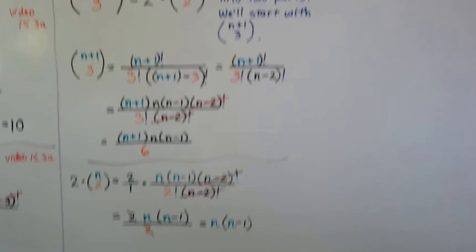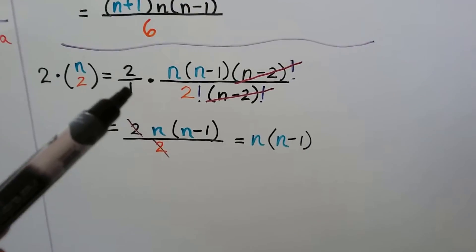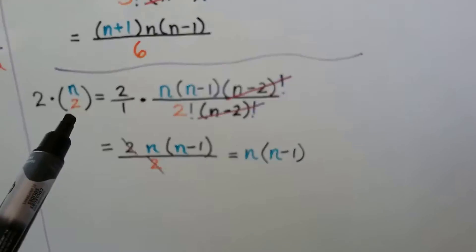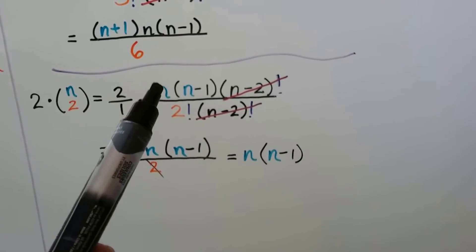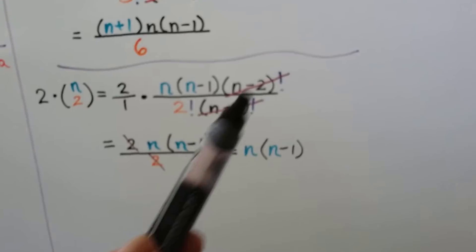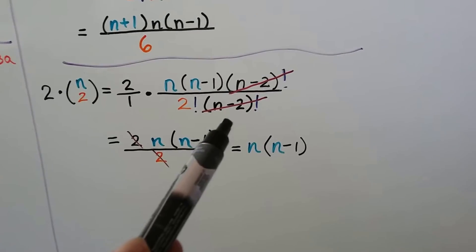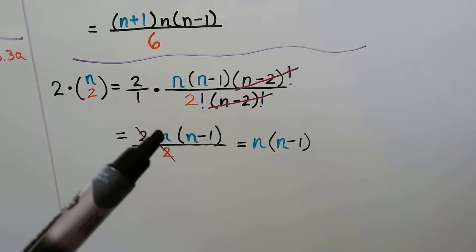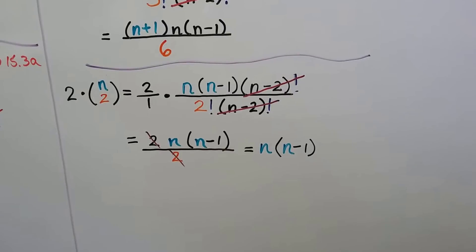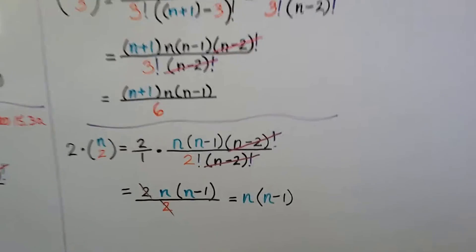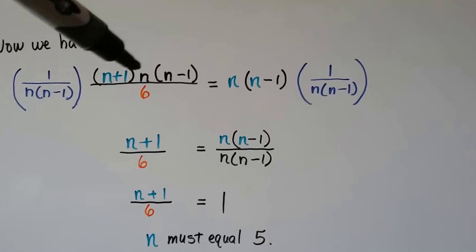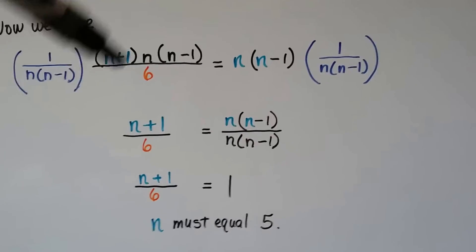Now for 2 times n choose 2. We write 2 over 1 so we can multiply straight across. For n choose 2, we expand to n times n minus 1 times n minus 2 so that we have a factor with the n minus 2 factorial. We cancel those out, leaving 2n times n minus 1 divided by 2. We can cancel those twos, leaving n times n minus 1. So our equation is n plus 1 times n times n minus 1 divided by 6 equals n times n minus 1, because it was 3 factorial, so it's 6.